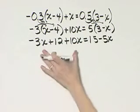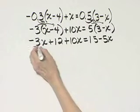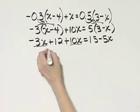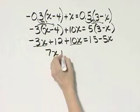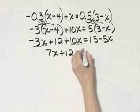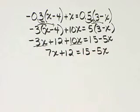Do I have any like terms? Yes, I do on the left side. Negative 3x plus 10x, that is 7x plus 12 is equal to 15 minus 5x.